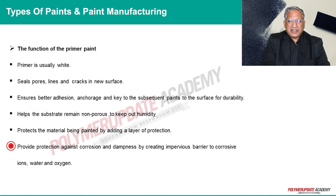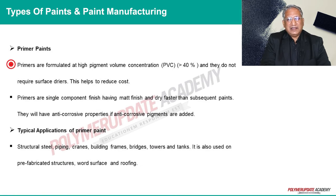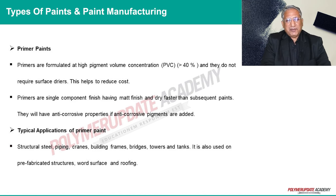Primer provides protection against corrosion and dampness by creating an impervious barrier to corrosive ions, water, and oxygen. Primers are formulated at high pigment volume concentration (PVC), which should be more than 40%, and they do not require surface dryers — this helps to reduce cost.